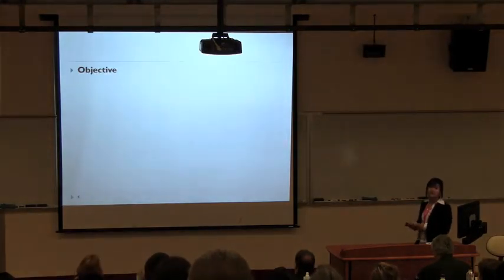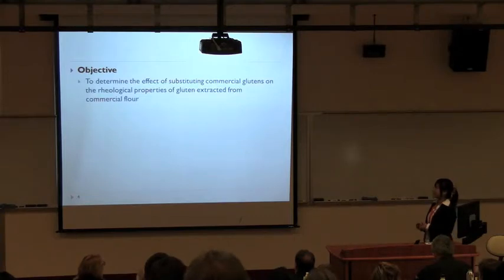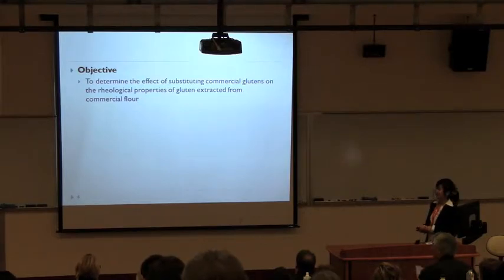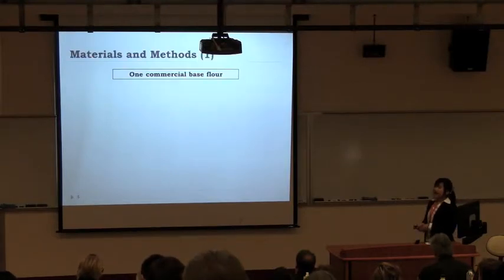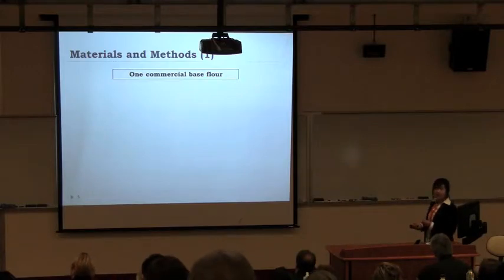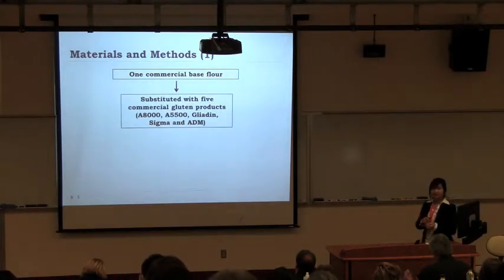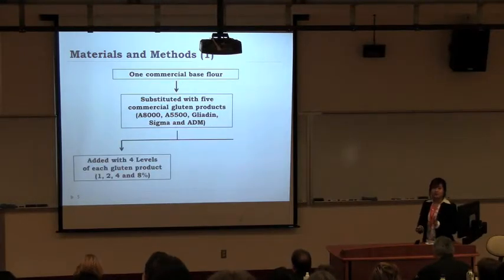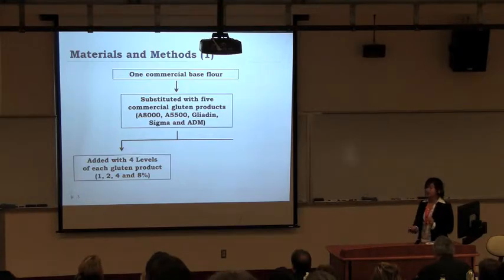The objective of my study is to determine the effect of substituting commercial gluten on the properties of gluten. I selected one commercial base flour and substituted it with five different commercial gluten products, then added them at four different levels for each gluten product.